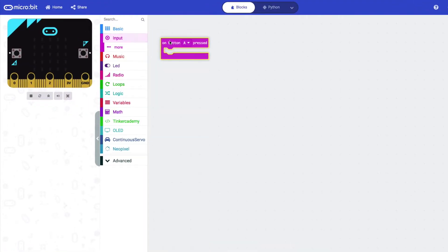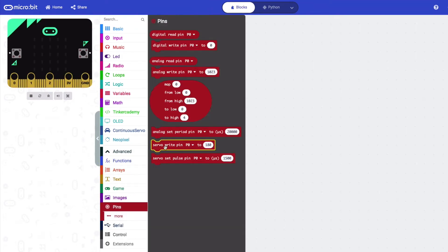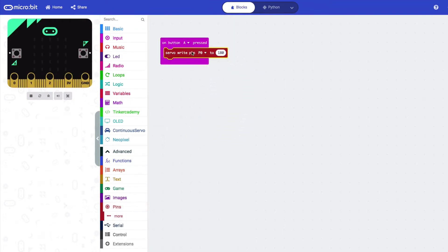Create an on button A pressed function. Under the advanced section, then the pins drawer, use the servo write pin block. Set the value inside the block to 180.